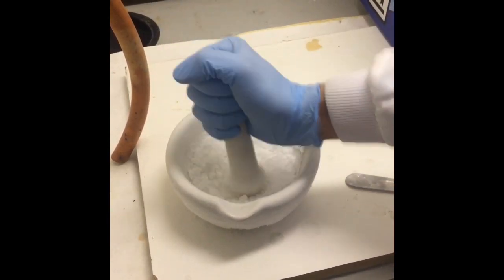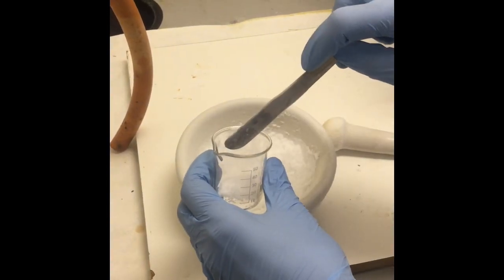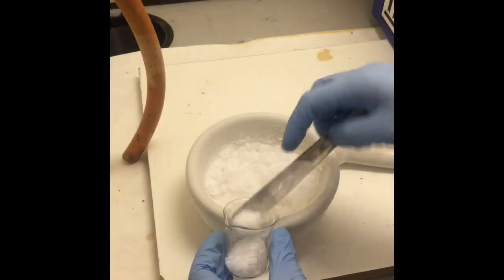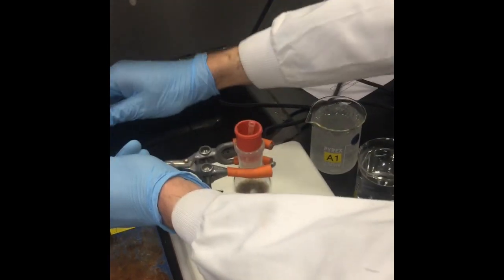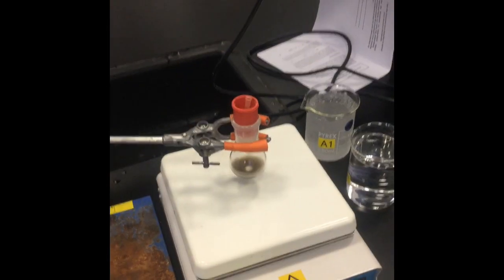Crush dry ice pellets and place the dry ice into a beaker. Once the solution is cool, remove the ice bath and lower the round bottom flask onto the stirring plate.